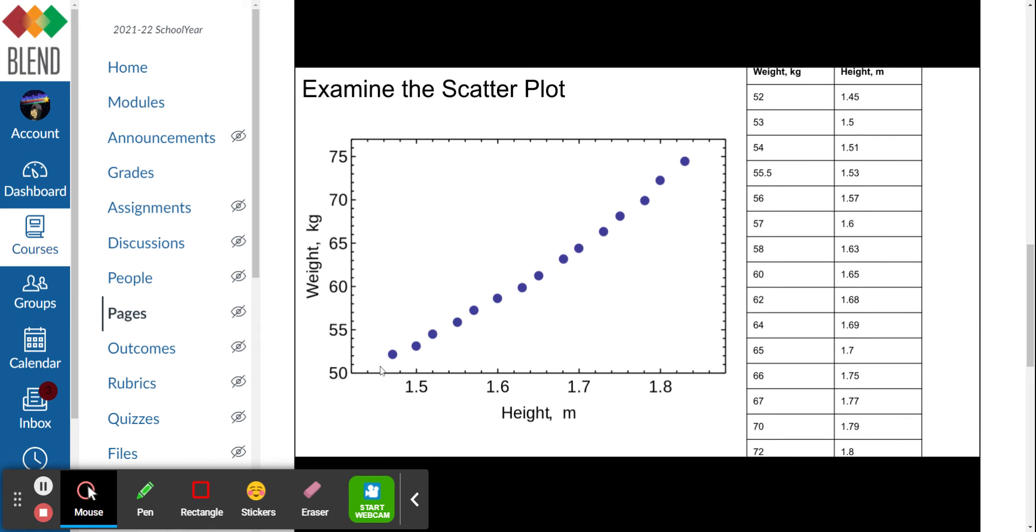So as you can see, a positive correlation is when the x-axis goes up, the y-axis goes up. Looking at height and weight, as the height on the x-axis goes up, it appears that the weight also goes up. So in a positive correlation, you can draw an arrow going from the bottom left to the top right.